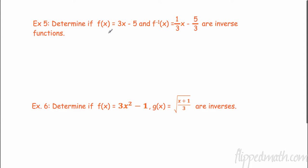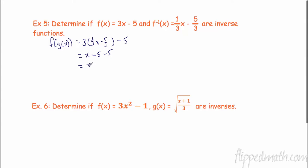Let's determine if f(x) = 3x minus 5 and f⁻¹(x) = (1/3)x minus 5/3 are inverses. We try f(g(x)): plug the inverse in wherever we see x. 3 times (1/3)x gives x; 3 times (5/3) gives 5, so we get x minus 5, and then minus another 5, giving x minus 10. That is not just x, so the rule fails — these are NOT inverse functions.